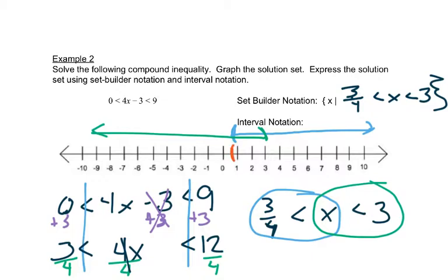We'd have a parenthesis at 3 fourths, and a parenthesis at 3, and the shading goes in between. Now I usually think of it as all at once. This x is in between, so I want to shade in between 3 fourths and 3, rather than graphing the two pieces.